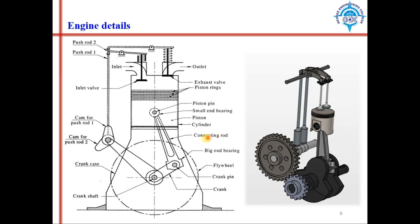The connecting rod is connected to the piston through a pin joint. This pin is called the gudgeon pin or piston pin. The whole assembly is enclosed in a casing. The topmost portion of this casing is called the cylinder.